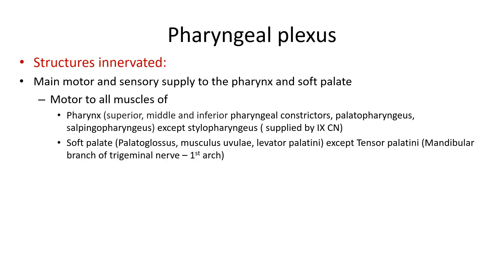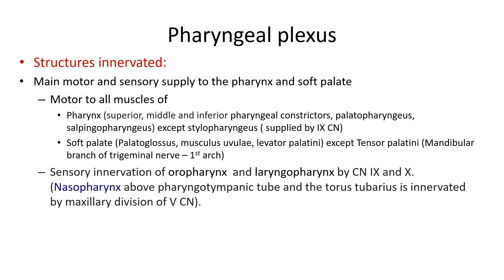For the soft palate, the pharyngeal plexus supplies the palatopharyngeus, the musculus uvulae, and the levator palatini. The exception is the tensor palatini muscle, which receives its nerve supply from the mandibular branch of the trigeminal nerve — the nerve of the first pharyngeal arch — as the tensor palatini is derived from the first pharyngeal arch.